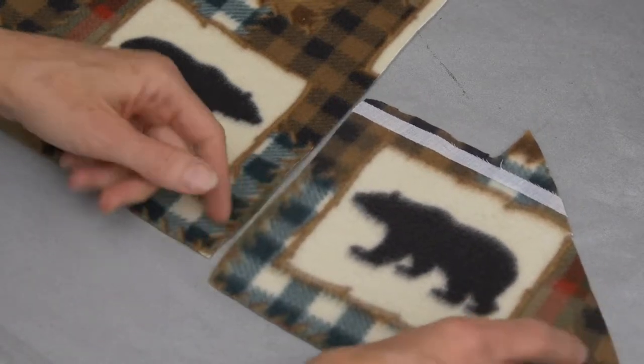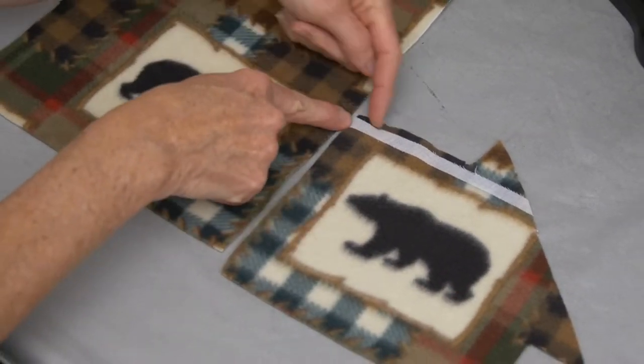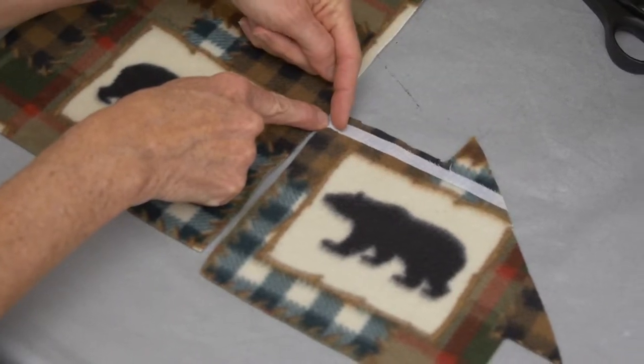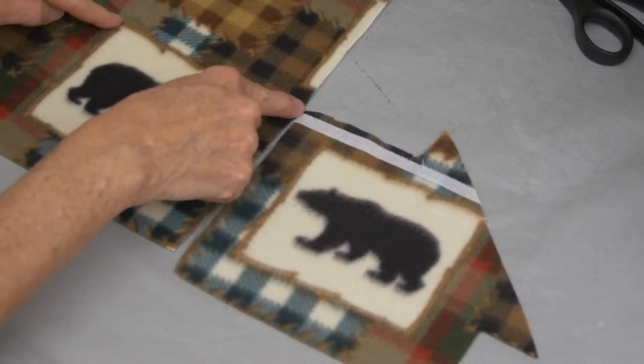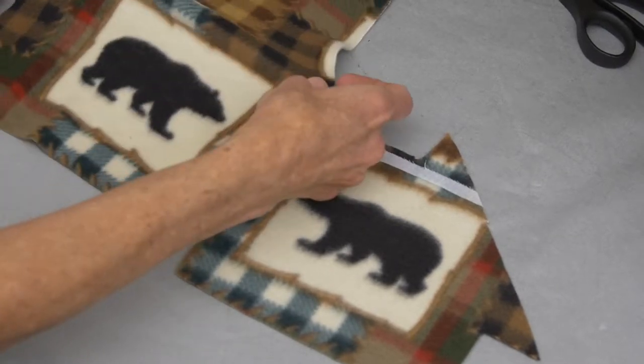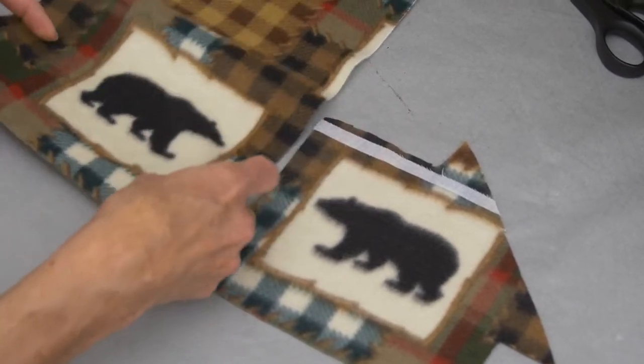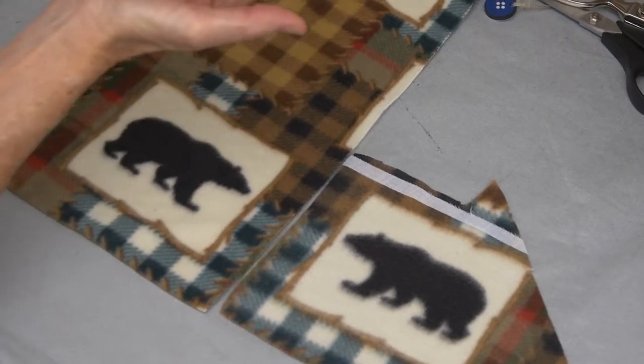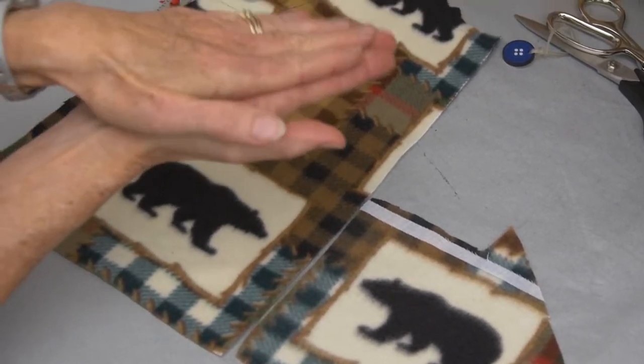So the first step that we're going to add is to put a piece of fusible stay tape along the top edge of that pocket, because again, this fabric tends to stretch quite a bit going around. As you sew, the pressure of your presser foot against the feed dogs actually stretches and pulls that fabric as it sews.